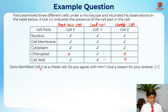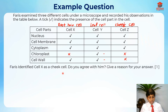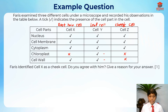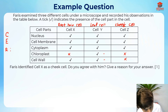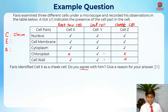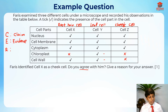They are telling us that Faris identifies cell X as a cheek cell — do you agree with him? Give a reason for your answer. When answering, we need to use the CER acronym: C means Claim — yes or no, do we agree? E means Evidence — the cell parts. And R means Reasoning — we need to explain why.